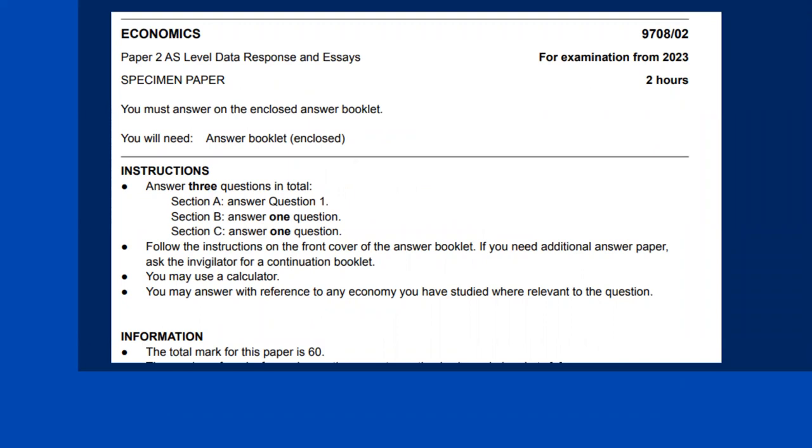Paper 2 is data response and essays. It's a two hour paper and the answer booklet is enclosed. In Section A, there is one question on data response with questions in parts worth 20 marks. In Section B, there are two questions - you do one question. In Section C, there are two essay questions - you do one question. The total paper is 60 marks, and the grades will come based on your performance.